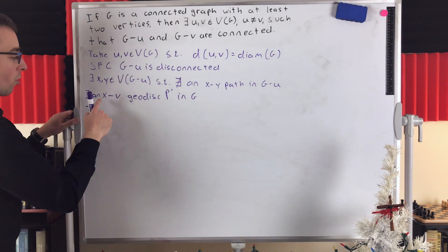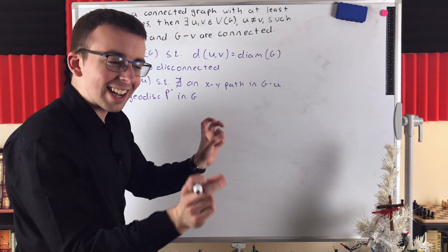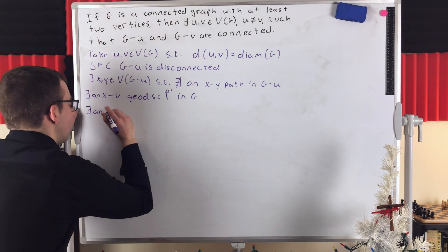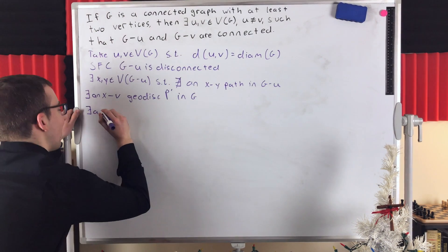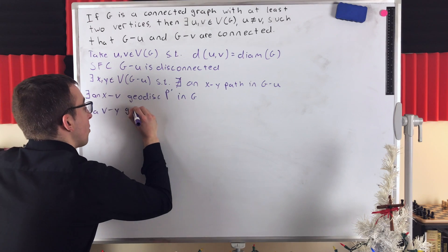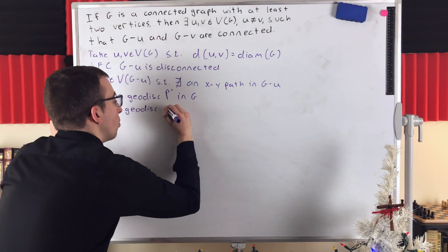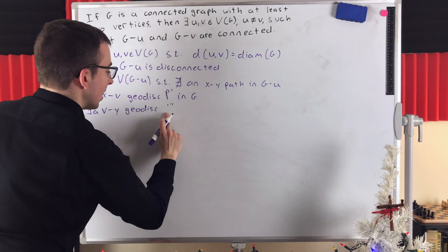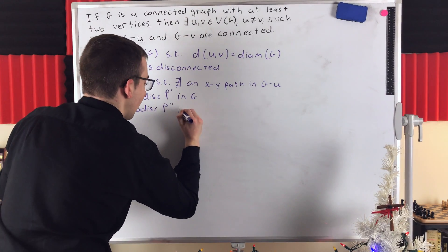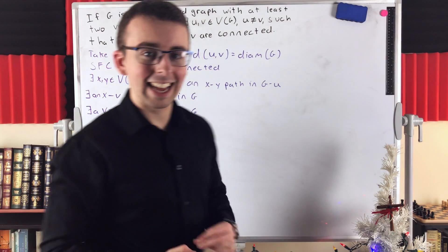Similarly, we're trying to stitch X to V and then V to Y to get our contradiction. There exists a VY geodesic, which we'll call P double prime, in the graph G — again because G is connected.